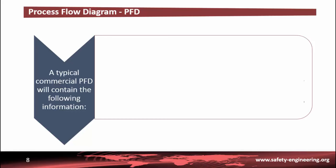Concerning the process flow diagrams, it represents a quantum step from the BFD in terms of the amount of information that it contains. The PFD contains the bulk of the chemical engineering data necessary for the design of the chemical process. For all the diagrams discussed in this part, there are no universally accepted standards. The PFD from one company will probably contain slightly different information from the PFD for the same process from another company. That said, it is true that most PFDs convey very similar information.